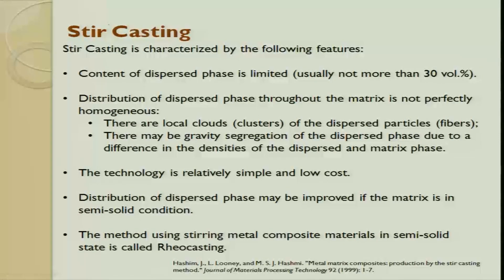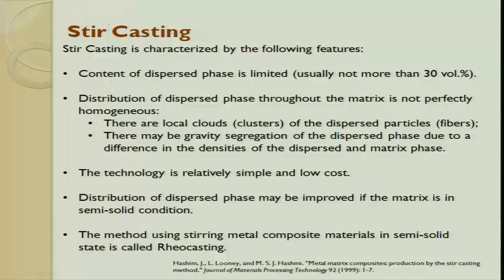Stir casting is characterized by the following features. The content of the dispersed phase is limited — you cannot go more than 30 percent volume fraction. If you keep adding more ceramic particles the material becomes lighter, but with more volume fraction there is a problem of agglomeration. In order to have proper distribution, the maximum best possible is 30 volume fraction.